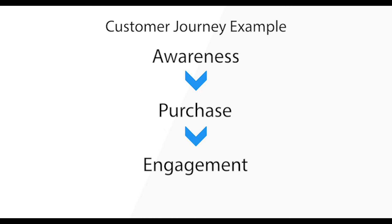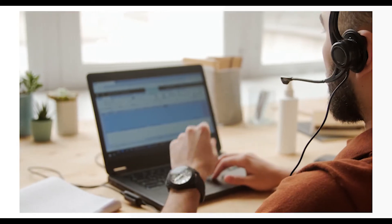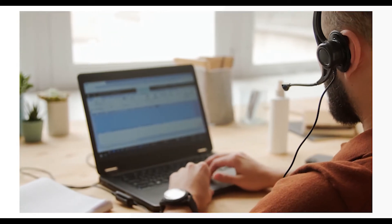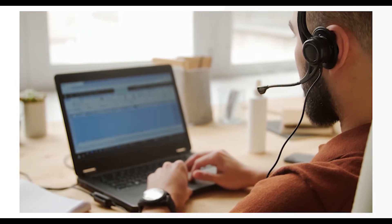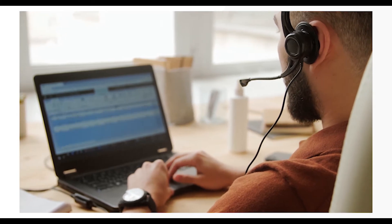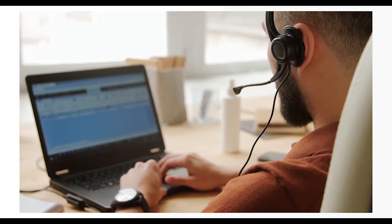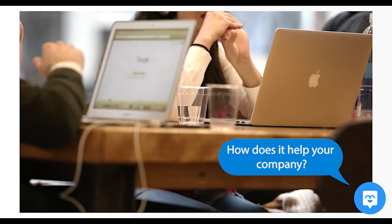A customer journey map can be as general or detailed as you want to make it. It can be a simple map with three stages like the one mentioned before, or it can be broken down into further stages. Taking a step further, you can draw out customer journey maps for specific departments of your company that deal with customers — for example, a customer journey map for customer support and a different one for customer success.